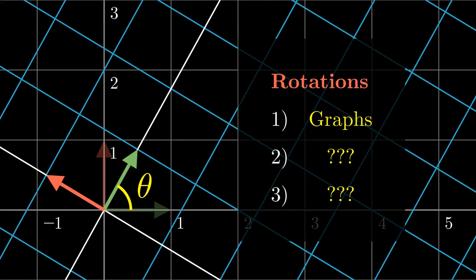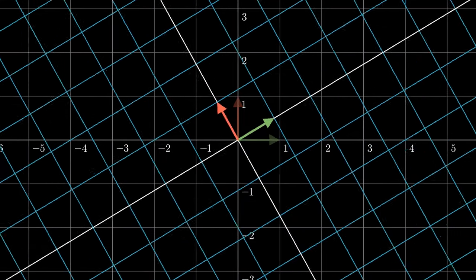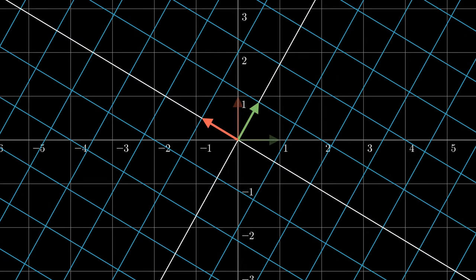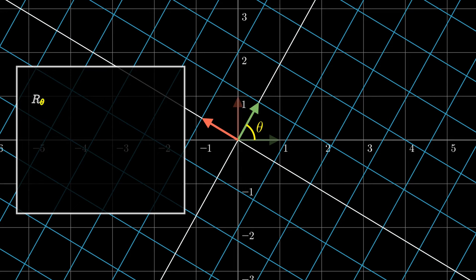But first, we need to know what is a rotation. Let's rotate by an angle of theta radians. And the rotation matrix can be calculated via the results of the green and the red vectors.